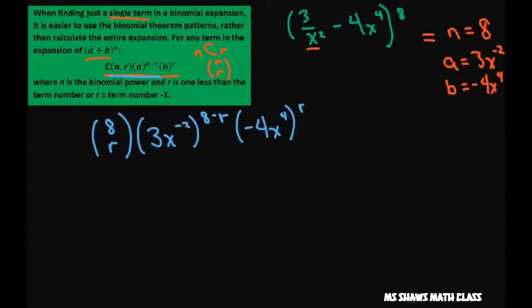So next what we're going to do is just look at these x's because I want to get to x squared. We need the coefficient in front of that x squared. So I'm going to take x to the negative 2 times 8 minus r and I'm going to take this x to the fourth power times r.